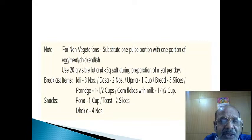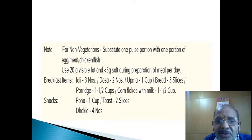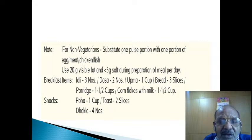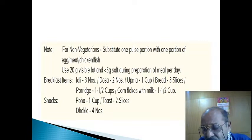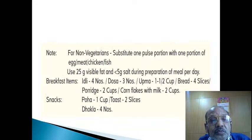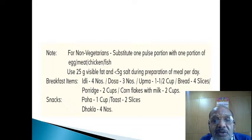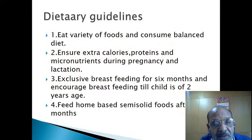Breakfast items typically include: idlis — three numbers; dosa — two numbers; upma — one cup; bread — three slices; porridge — one and a half cups; and cornflakes with milk — one and a half cups, not more than that. For snacks: poha — one cup; toast — two slices; and dhokla — four numbers. For non-vegetarians, substitute one pulse portion with one portion of the relevant food, as already mentioned.